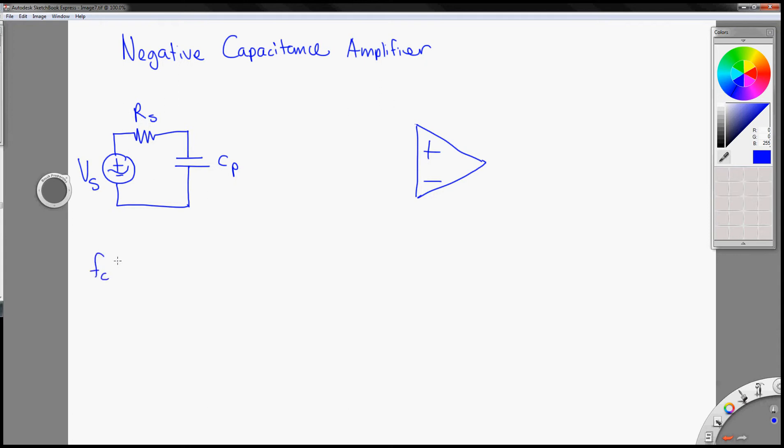So you have a corner frequency for a low pass that is significant in many applications. This is the low pass action caused by these two RC combinations.